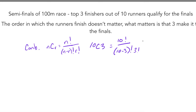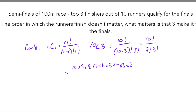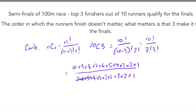Now we can simplify. We have 10 factorial on top, and subtracting 3 from 10 gives us 7 factorial times 3 factorial on the bottom. Expanding: 10 factorial is 10 times 9 times 8 times 7 times 6 times 5 times 4 times 3 times 2 times 1, all over 7 factorial — which is 7 times 6 times 5 times 4 times 3 times 2 times 1 — times 3 factorial, which is 3 times 2 times 1. We can cancel everything from 7 to 1, leaving 720 over 6, which reduces to 120. That's the answer.